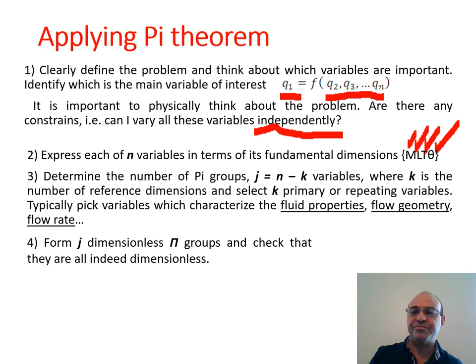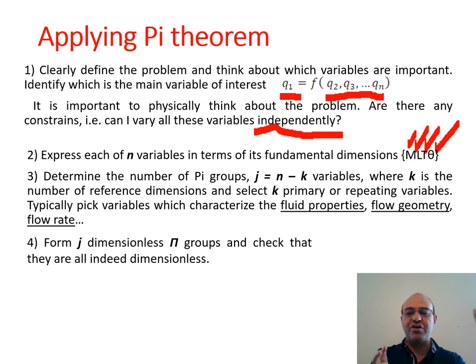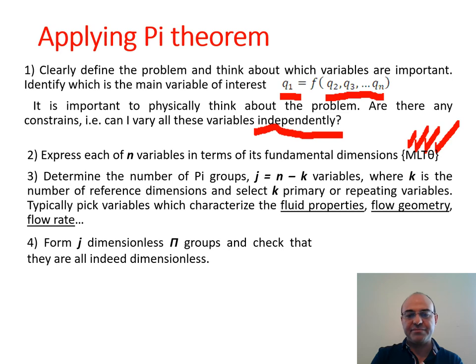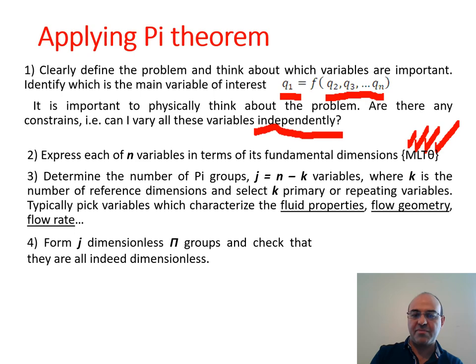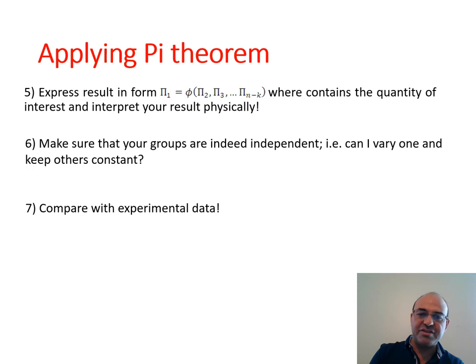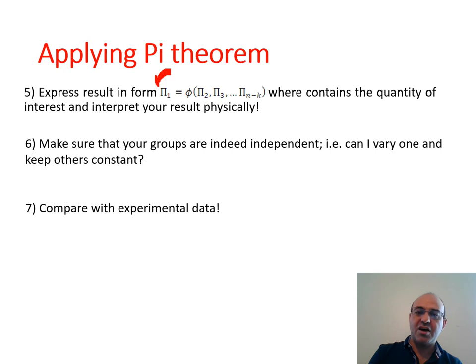The repeating variables are used to create non-dimensional terms. Usually the repeating variables are fluid properties, geometry, flow rate, and so on. When combined with other important variables — for instance with the force — they create the drag coefficient. When combined with velocity or another property, they create a non-dimensional number such as Reynolds number. Then form J dimensionless pi groups following the process and check that they are indeed dimensionless.